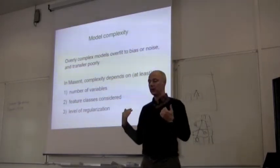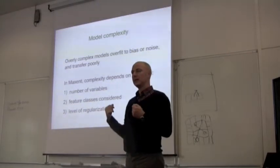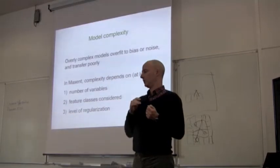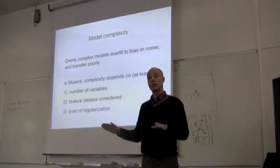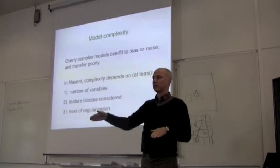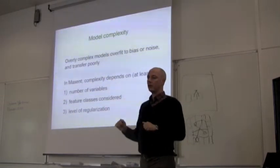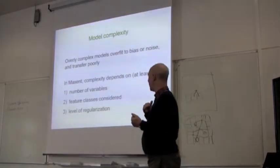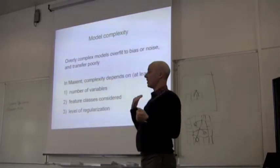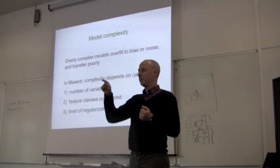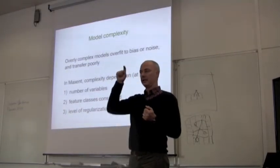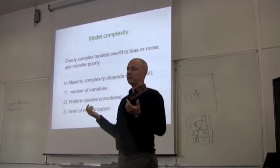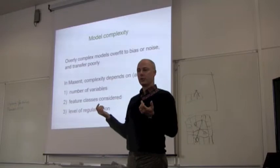Feature classes refer to the flexibility that you give Maxent in order to form the shape of the response curve. You could say you only want to use linear features. If you have linear and quadratic, then it can make a more complex shape. If you have something called hinge features, it means you can draw a whole bunch of little linear lines and connect them, so that you could have a very complex shape for the response.